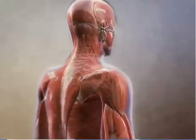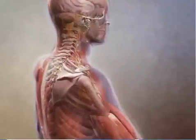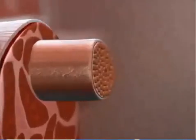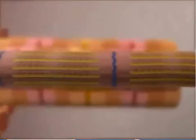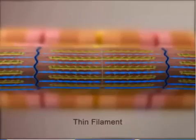When an action potential travels to a muscle fiber, a series of steps begin within the fiber that result in contraction. Muscle fibers are organized into units called sarcomeres that contain two types of filaments. Thick filaments consist of myosin. Thin filaments consist of myosin.